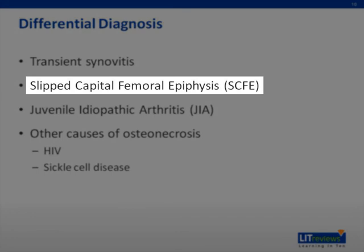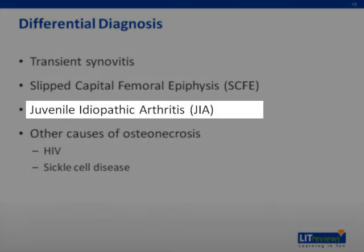SCFE is a non-inflammatory condition where the femoral head is displaced from the neck, and it commonly presents in overweight males between the ages of 10 to 14. Juvenile idiopathic arthritis, or JIA, is an autoimmune disorder characterized by arthritis lasting more than six weeks, as well as systemic symptoms.